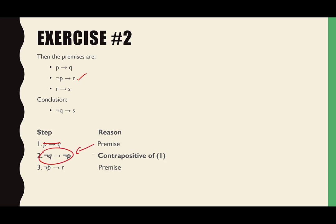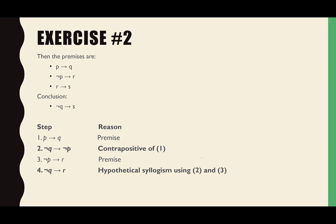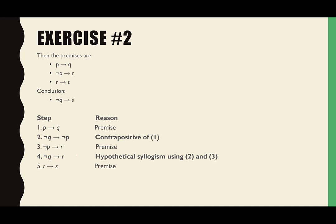We're ignoring the original first premise because the contrapositive is just another form of it. Amanda pointed out we can apply hypothetical syllogism: we have not-Q therefore not-P, and then not-P therefore R — something, therefore something else, and that something else, therefore a third thing. We can cut out the middleman to get not-Q therefore R.